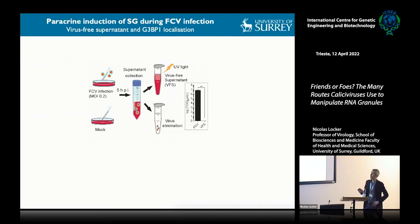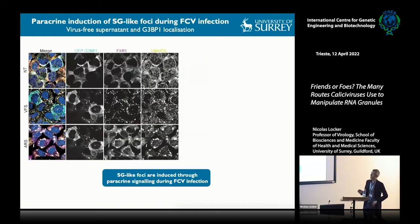To test this hypothesis, we took mock or infected cells, collected the supernatant, eliminated the virus, inactivated this virus-free supernatant, and confirmed it was free of viral particles, induces no cytopathic effect, no viral replication, and contains no viral proteins or viral RNA. When we treated cells with virus-free supernatant, we could see canonical stress granule markers such as UBAP2L, FXR1, or G3BP1 all relocated to cytoplasmic foci that look visually different from arsenite-induced stress granules but contain stress granule markers.